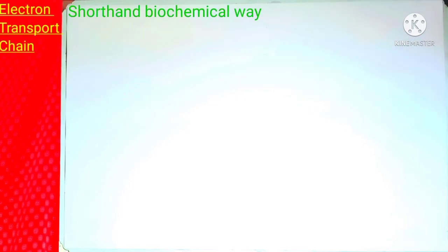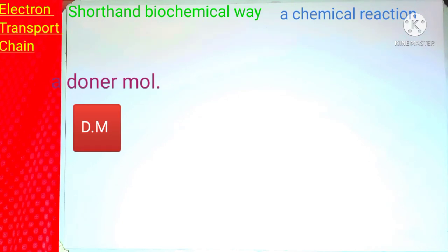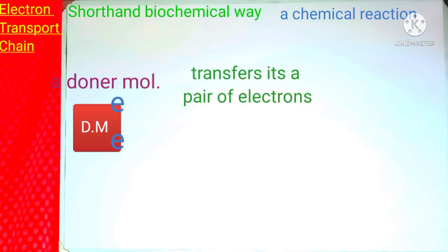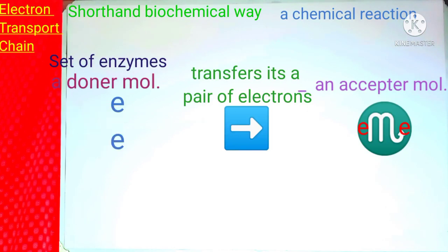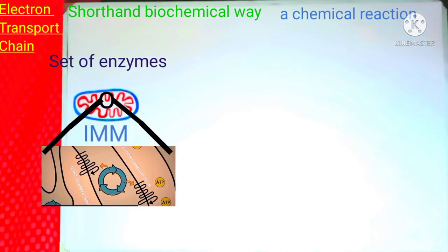Let's come back to our topic: the electron transport chain. The electron transport chain is a biochemical process describing a chemical reaction in which a donor compound transmits a pair of electrons to an acceptor in the presence of an enzyme. In simple words, the electron transport chain is a set of enzymes present on the inner mitochondrial membrane and it is the main source of energy generation in the aerobic pathway of energy production.